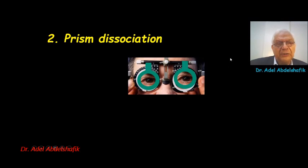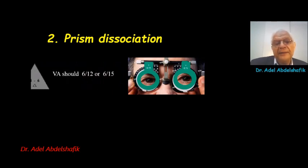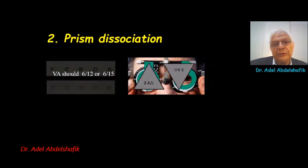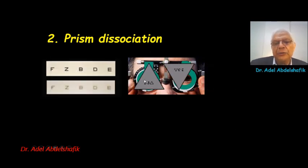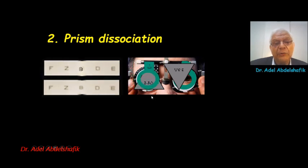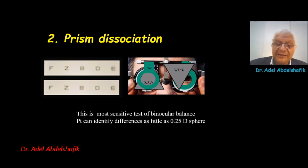The second method is prism dissociation. After reaching the correction, we blur both sides to 6/12 or 6/15, then place a prism of 4 to 6 diopters in front of one eye, splitting the image so one side shifts up and the other shifts down. Both sides should be equally blurred. If one eye shows better than the other, we add more plus lenses until both sides are equally blurred. Prism dissociation is the most sensitive test of binocular balance — the patient can identify as little as one quarter of a diopter difference between the two eyes.